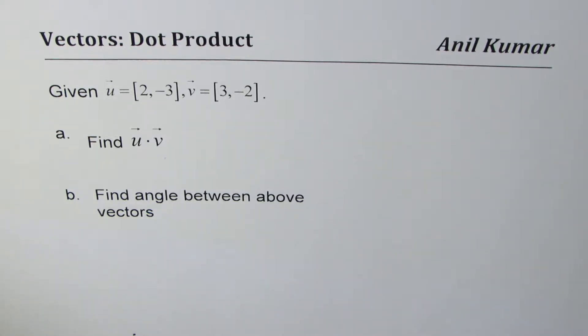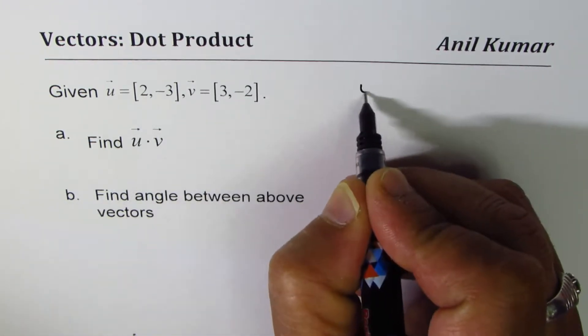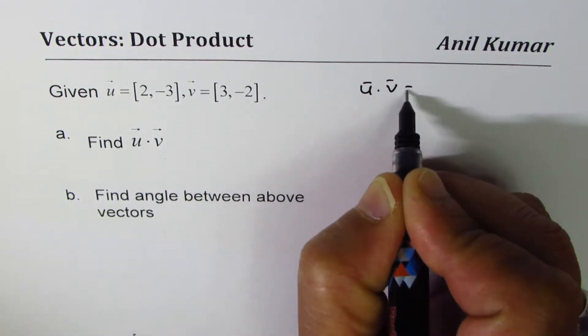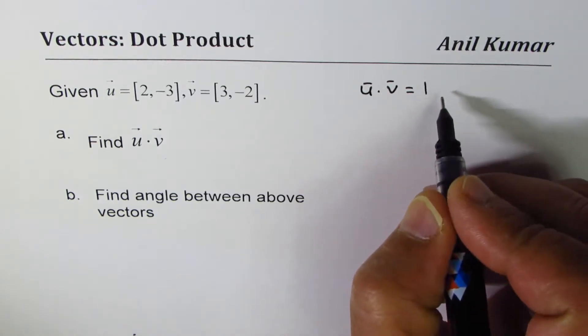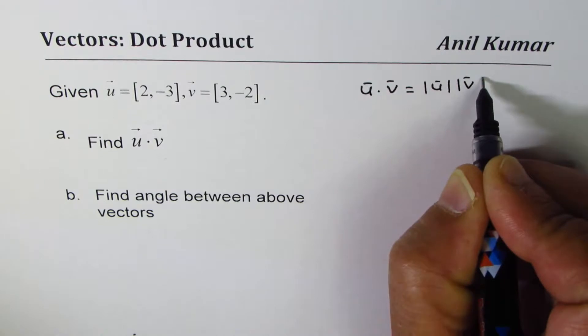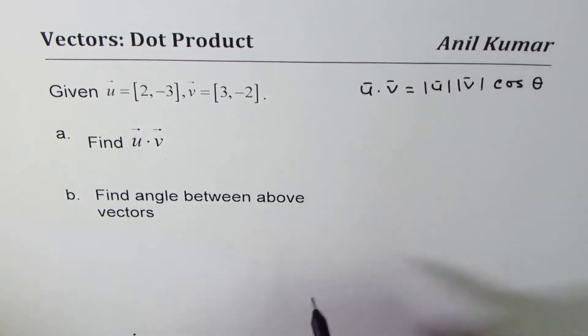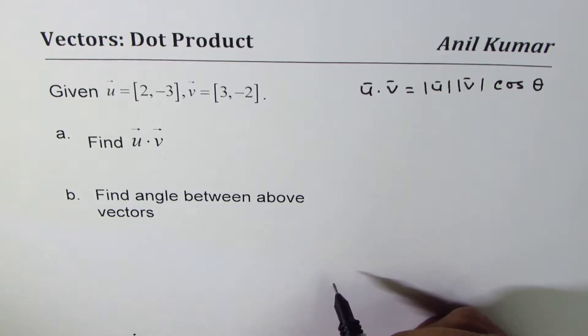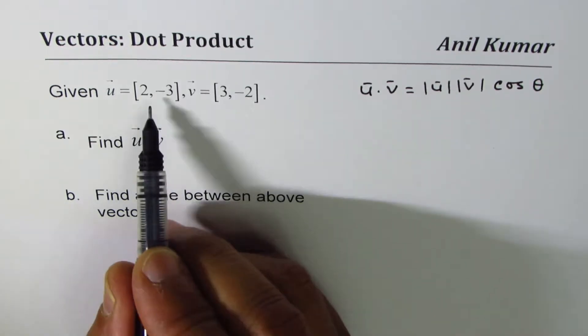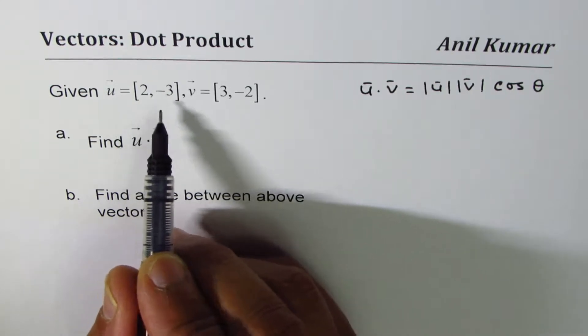You can always pause the video, solve the question, and check with my solution. The formula for dot product is what we can begin with: u dot v is equal to magnitude of u times magnitude of v times cos of angle between them, let's call it angle theta. Now whenever you have components, this is in the component form.